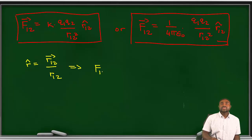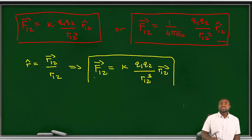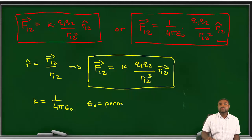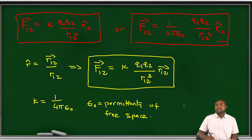This therefore means that F12 is going to be equal to K Q1 Q2 divided by R12 cubed R12 bar. This is another way of expressing the force between two charges, where K is just 1 over 4π epsilon naught, and epsilon naught is a constant known as the permittivity of free space.